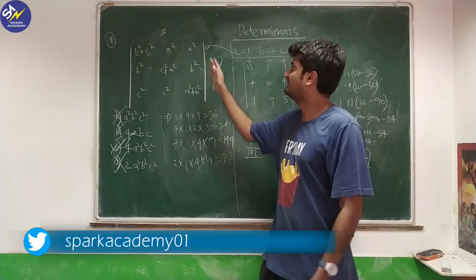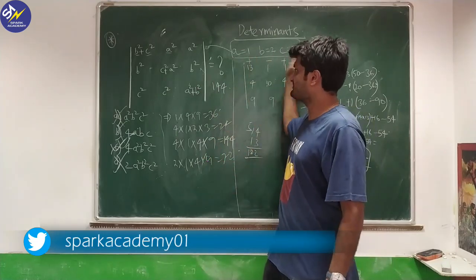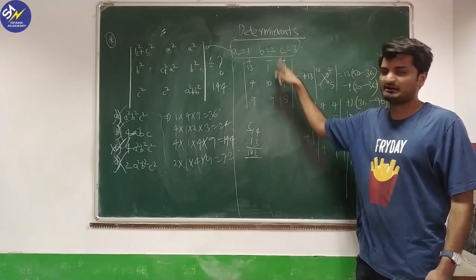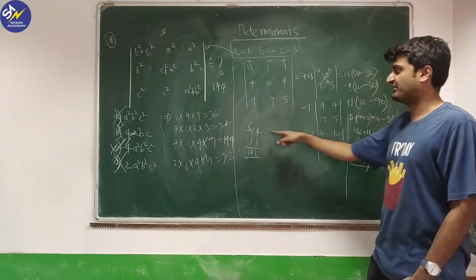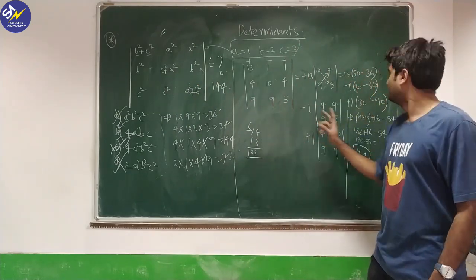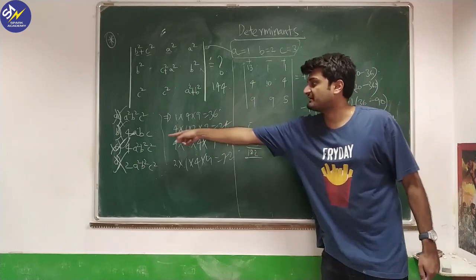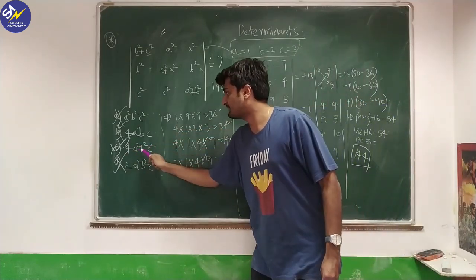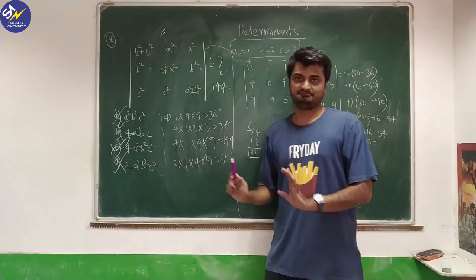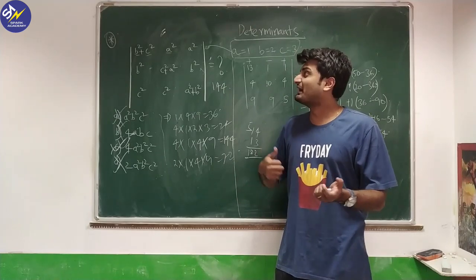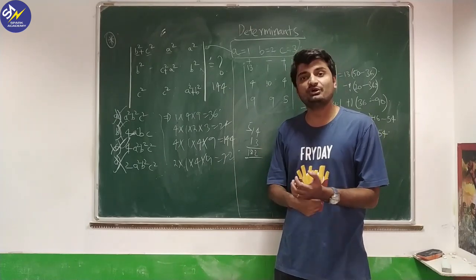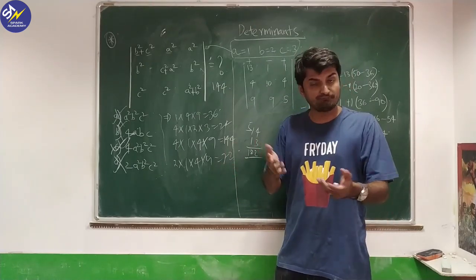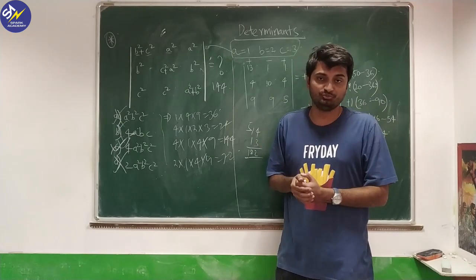So the approach we used was: assume values for A, B, C; substitute into the question; simplify the 3×3 determinant; get the answer; and verify against the options. We got option C: 4A²B²C². You can expect at least one question based on this method in your competitive exams. Hope you all enjoyed this — thank you.